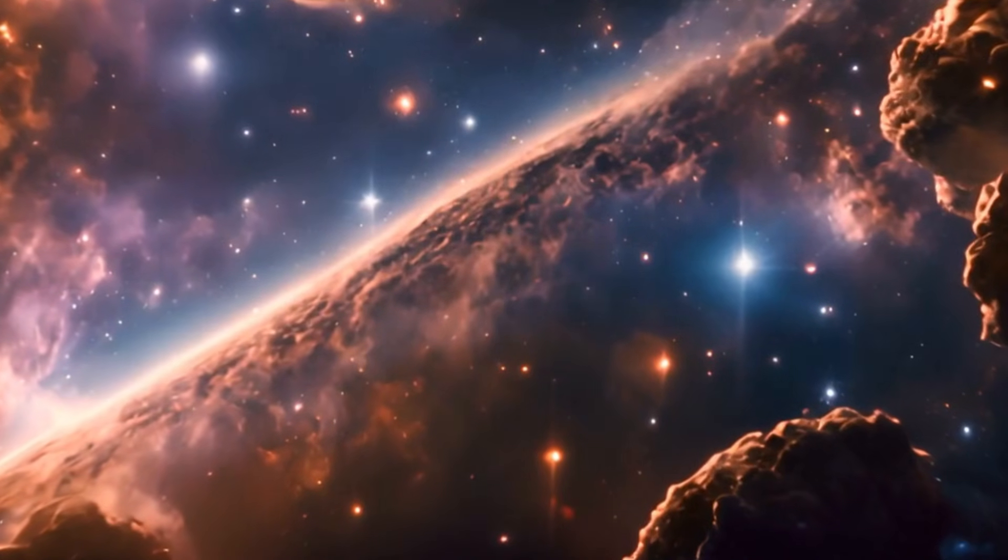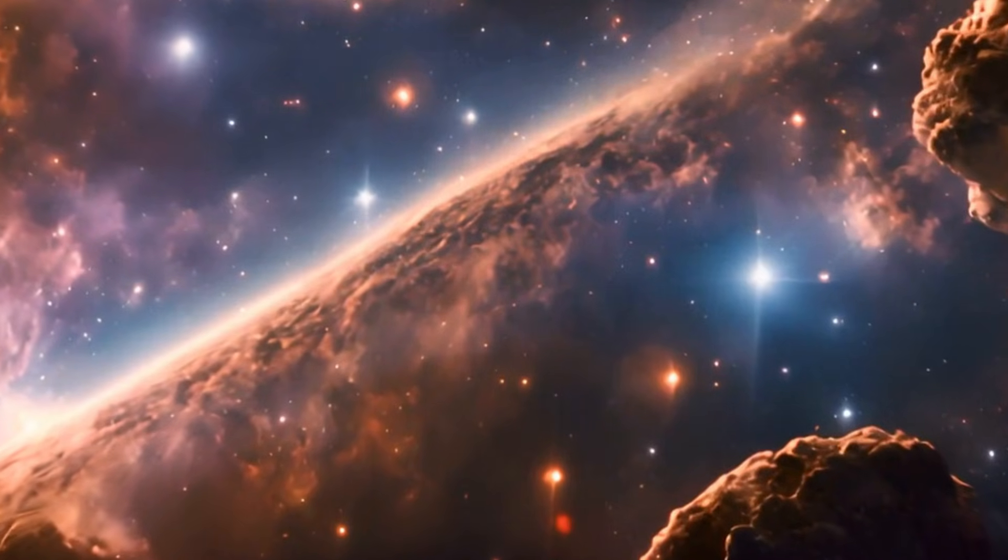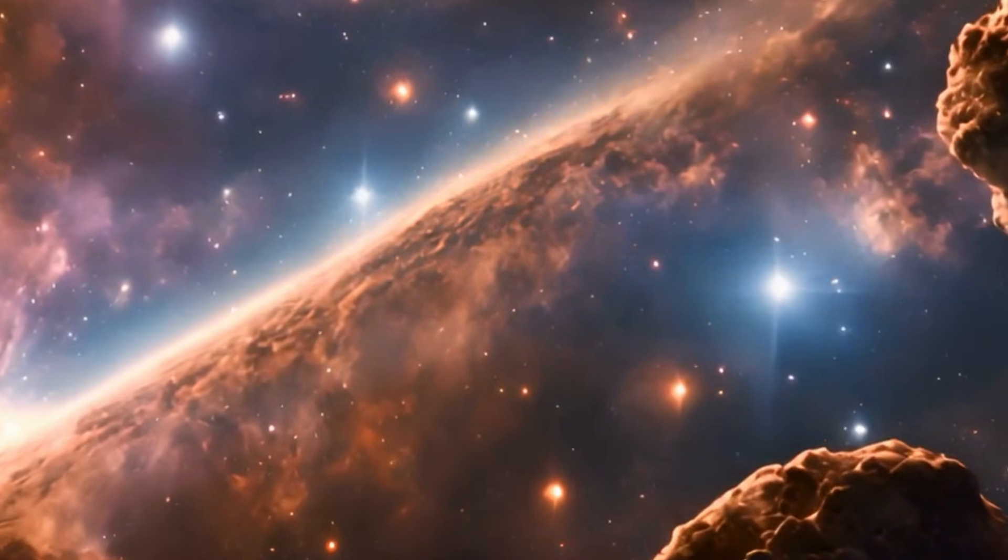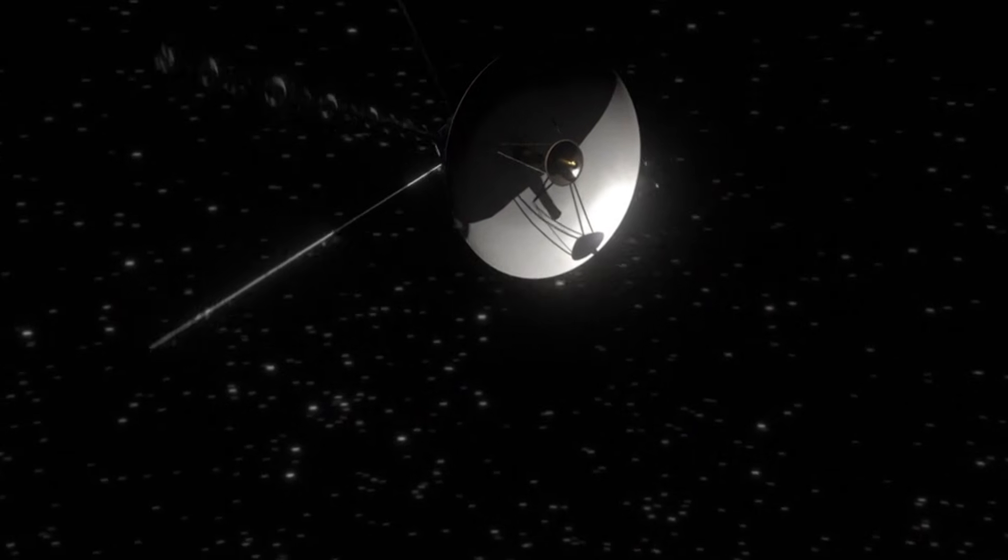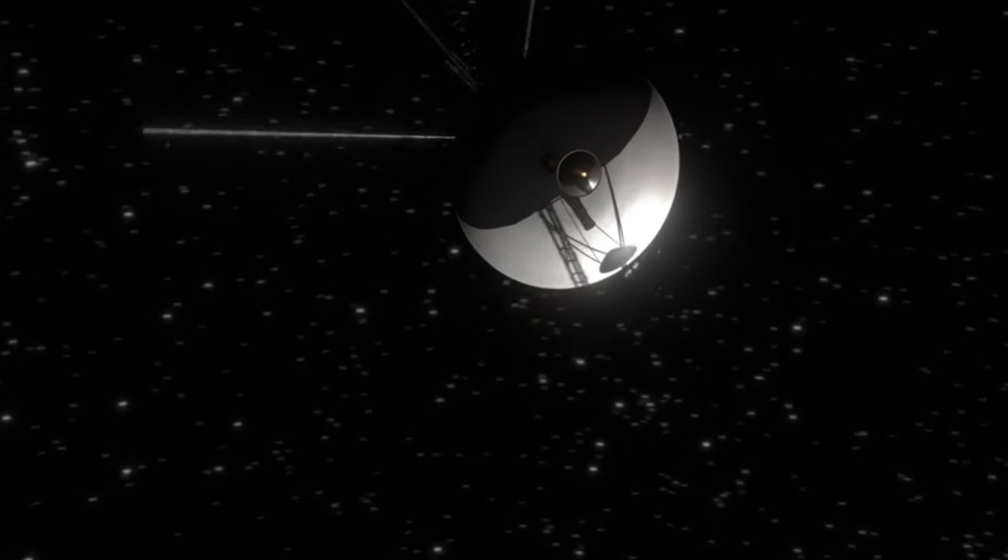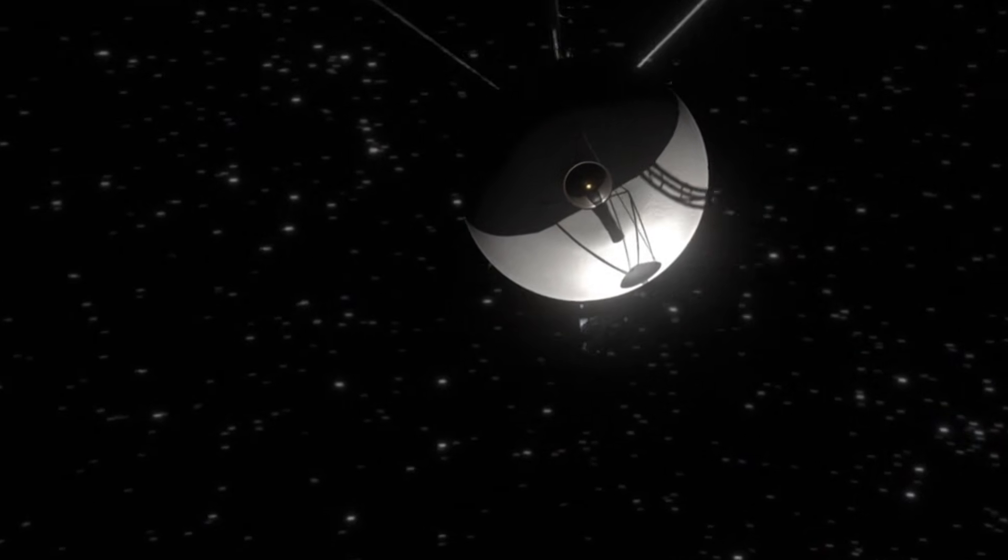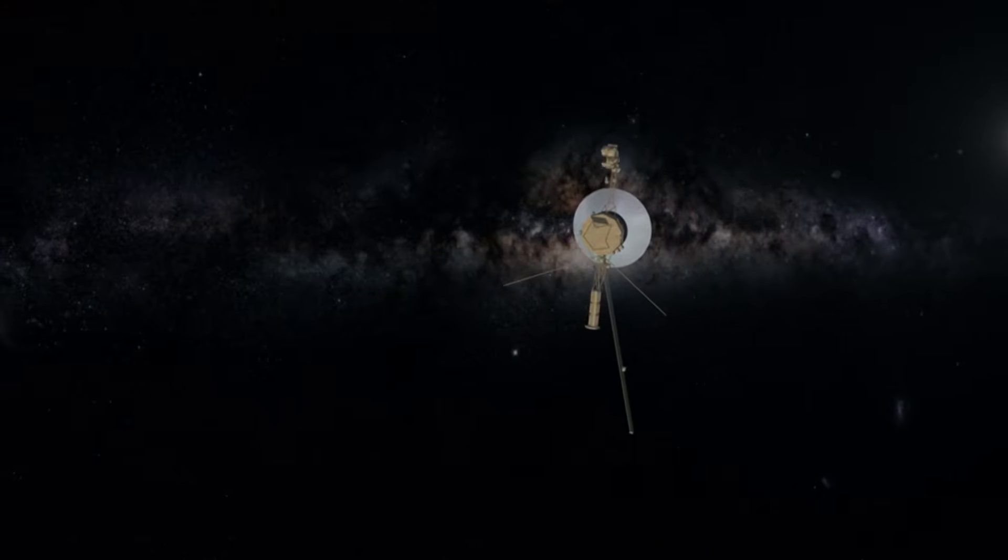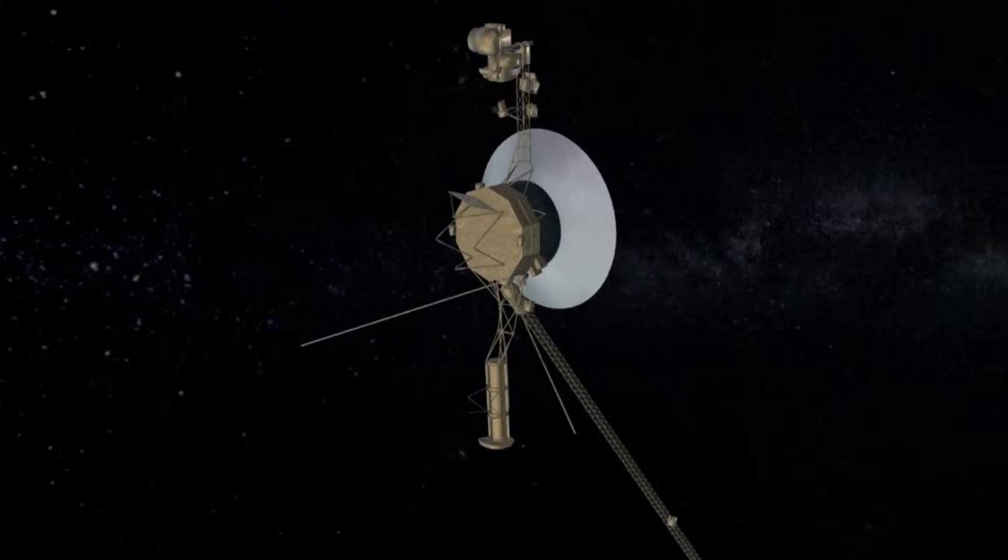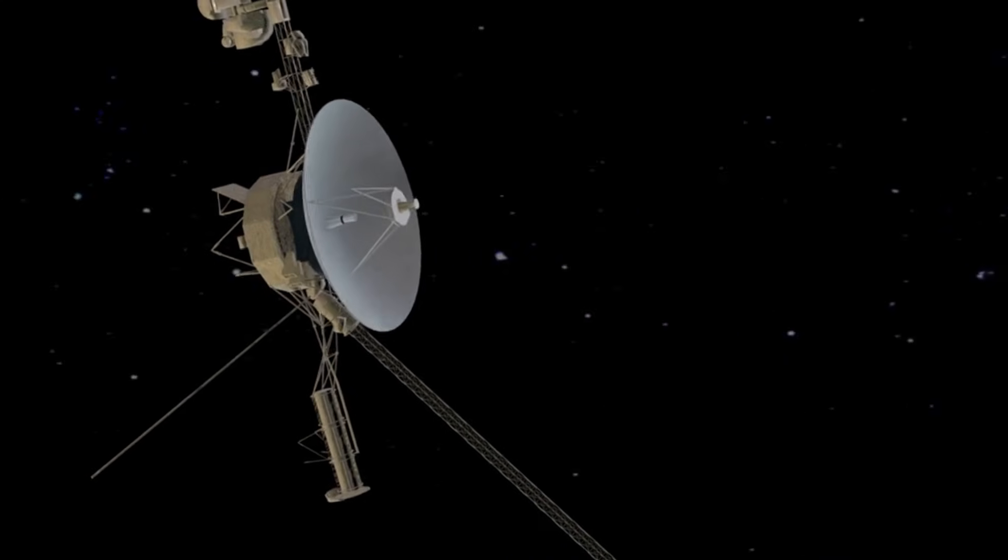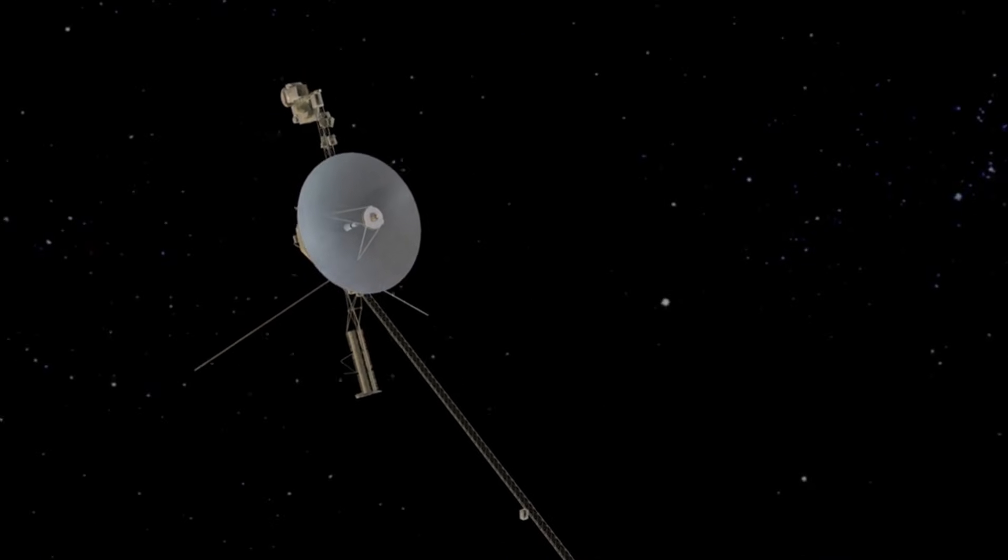Let's embark on a journey through the cosmos to uncover the mysteries surrounding Voyager 1. Voyager 1, now over 15 billion miles from Earth, continues to operate in the vast expanse of interstellar space. Despite its age and distance, the spacecraft remains functional, receiving commands from NASA, executing them, and transmitting valuable scientific data back to Earth.